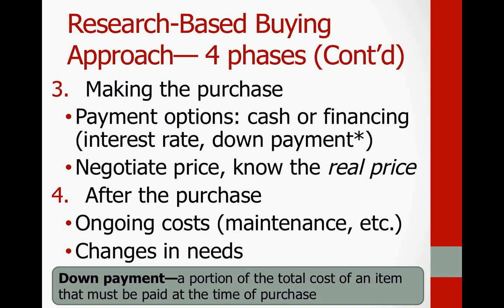The fourth phase is after the purchase — look at any ongoing costs. For example, a $20,000 car still has costs like gas and regular oil maintenance that keep increasing. Note those ongoing costs after the purchase is made. Also, your needs may change, and you may want to sell or return the item. Being a reflective consumer helps, because that experience will influence your next buying decision. The goal is for you to become a research-based buyer who does homework before purchasing and moves away from brand-name loyalty.